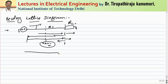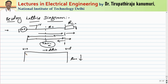In the Bewley lattice diagram method, the X-axis is along the distance, starting from X=0 and going up to X=L at the terminal. The Y-axis represents time. If a wave is transmitted at time t=0, it takes some time to reach the far junction. Assuming it reaches in time t seconds, it has a magnitude of 1. Some part is then reflected back and some part is transmitted to the load.